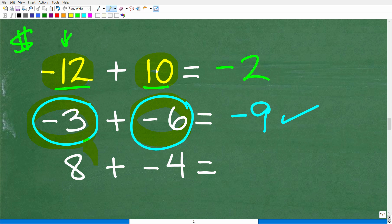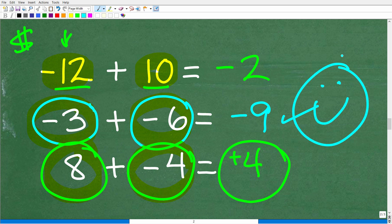Our final problem is 8 + (-4). The answer is a positive 4. If I have $8 and I owe someone $4, I get to keep $4. If you got all of these right, that's fantastic. You're going to get another happy face and an A+. If you got a few wrong or you're still working on this, I'm going to give you an A+ as well for trying.